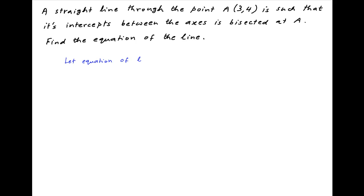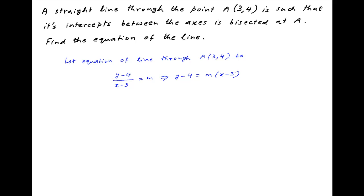The equation of any line through the point A with coordinates can be written as y minus 4 divided by x minus 3 is equal to the slope of this line. Let's assume that that is equal to m. Cross multiplying, we get y minus 4 is equal to m times x minus 3.